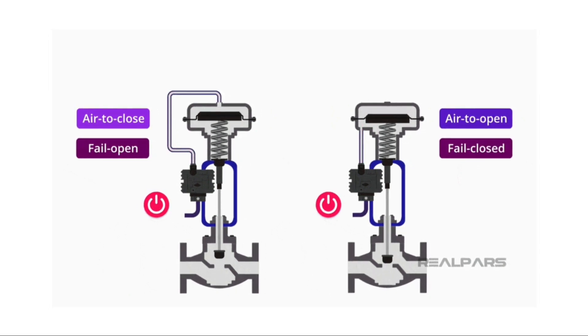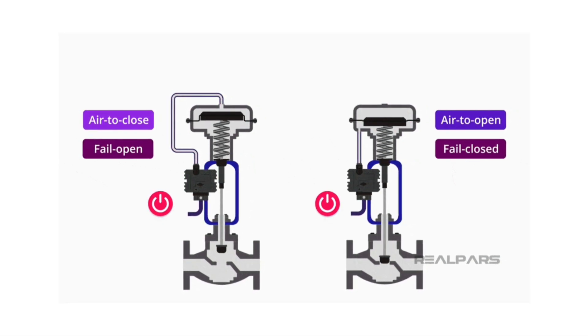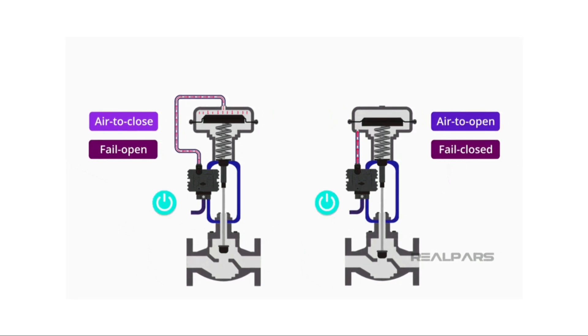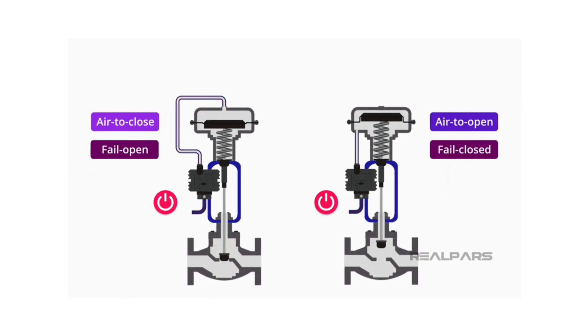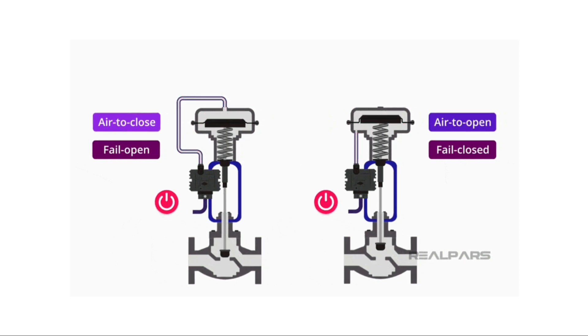In an air to open operating condition, the spring forces the valve closed. The air pressure on the diaphragm creates a force that overcomes the force of the spring and opens the valve. By rearranging the spring pneumatic supply, this type of actuator can fail open or fail closed when air pressure is lost.